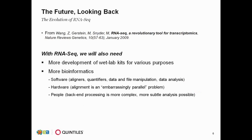That paper also discussed what was going to be needed in the future. Certainly one item thought to be needed in 2009 was more development of kits for various specialized purposes — for example, dealing with lower integrity samples or dealing with specialized samples. Also, it was viewed that a lot more bioinformatics was going to be needed to do this type of analysis well, including more software such as aligners, quantifiers, and tools for data and file manipulation because of large amounts of data, as well as data analysis. Additionally, more hardware was going to be needed and more people, because the back-end processing is now becoming possibly more complex than the front end of the process in the wet lab.